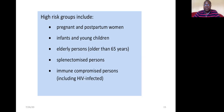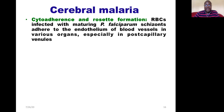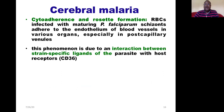High-risk groups who often develop severe malaria include pregnant and postpartum women, infants and children, the elderly, people who have had their spleen removed, and immunocompromised patients. Some patients develop cerebral malaria, which occurs because of cytoadherence and the formation of rosettes — where red blood cells infected with maturing Plasmodium falciparum adhere to the endothelium of blood vessels, causing blockage, especially in the brain, leading to decreased consciousness and convulsions.